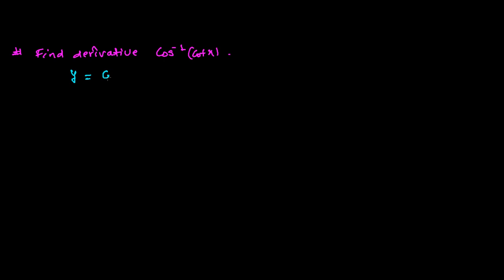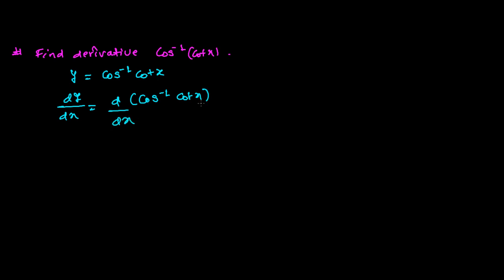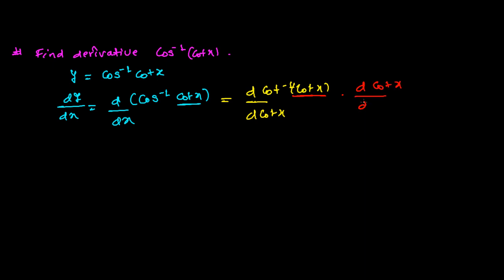Let's suppose our function y is cos inverse of cot x. Now let's differentiate both sides with respect to x. So we'll get dy/dx equals the derivative of cos inverse cot x with respect to x. Since cos⁻¹ has the angle as cot x, you cannot directly differentiate with respect to x, so we need to make a small change.